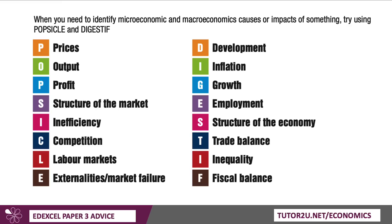For macro, you can't go wrong if you go back to your macro objectives: inflation, growth, unemployment, trade, development, inequality, and of course the government's fiscal balance. So maybe, if you haven't already used it, 'popsicle and digestif' could be a useful way of thinking about micro and macro points.